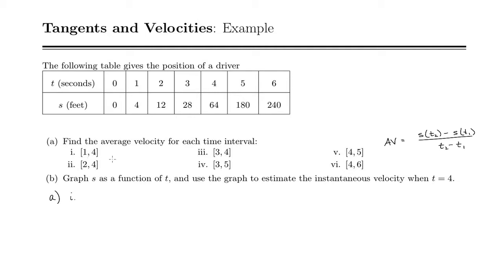So we're going to do that for each of these. We have s of 4 minus s of 1 divided by 4 minus 1, and we just use our table. So s of 4 is 64 minus s of 1 is 4 divided by 3. So 60 divided by 3 is 20. And let's put our units on this. This was position over time, so that's feet per second.